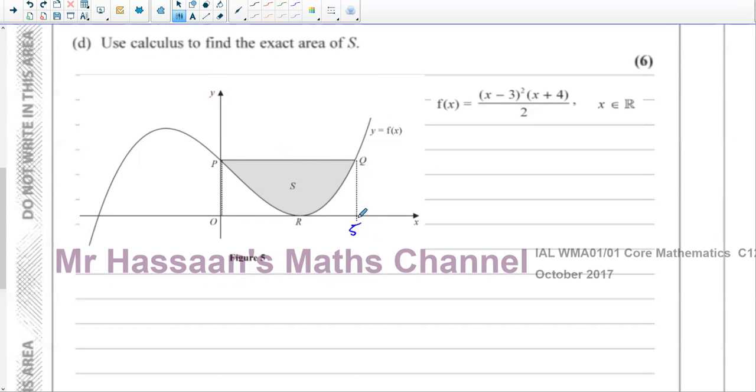Okay, so we now know that this is the line x equals 5 Q. The x-coordinate of Q is 5. And of course, here, P is the origin, 0. The x-coordinate is 0. So we can see that the area that we require is the area between the line and the curve.